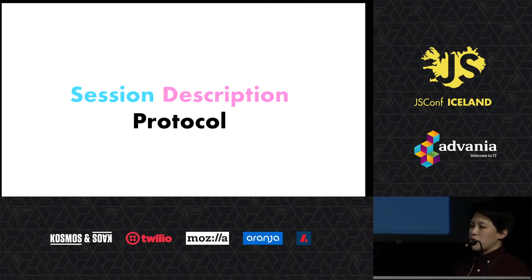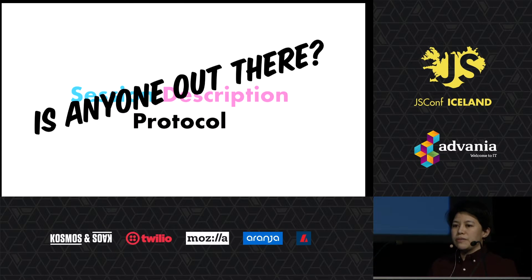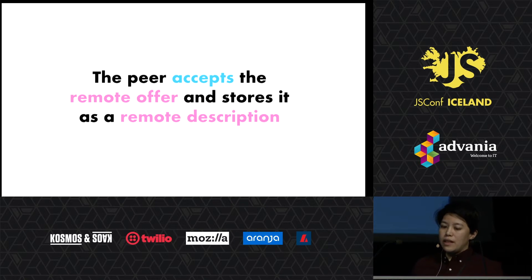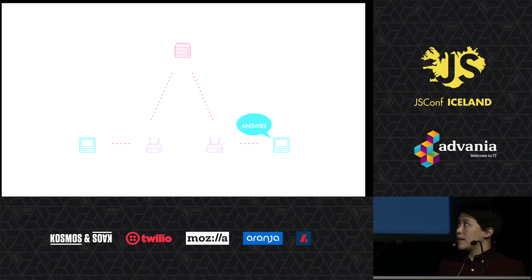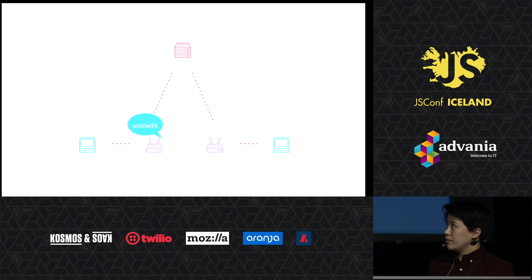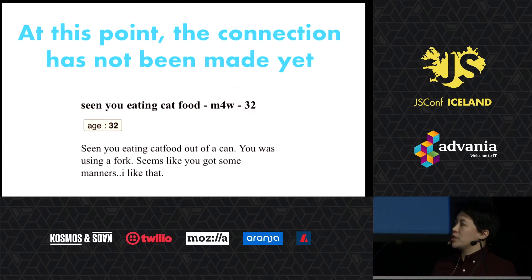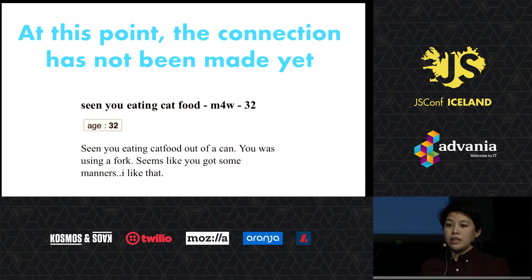Signaling starts off with the session description protocol. This is almost the equivalent of just finding out if anyone's out there. A computer needs to find out if another computer is out there, so they make up a session description protocol and send it out in the form of an offer. The offer goes through the router, through the signaling server, and then reaches the other peer. The peer accepts the remote offer and stores it as a remote description. Once they've done that, they create another SDP called an answer, which is sent back through the signaling server to the other peer. The peer accepts the remote answer and sets it as the remote description. However, at this point we've sent an offer and an answer, but a connection between the two peers hasn't been made yet — they still don't know how to make the connection.